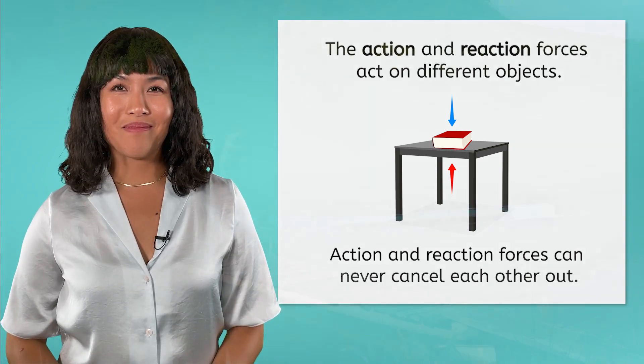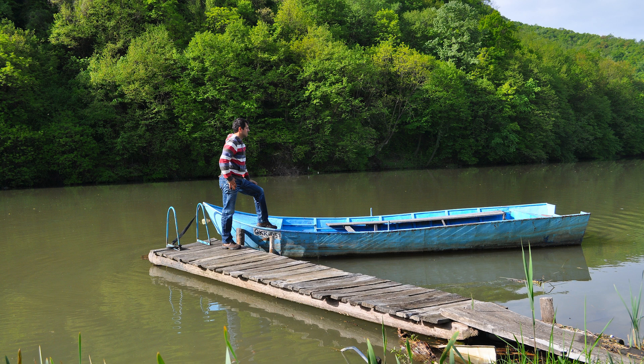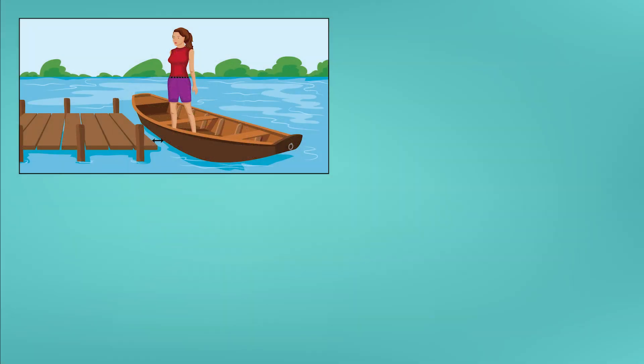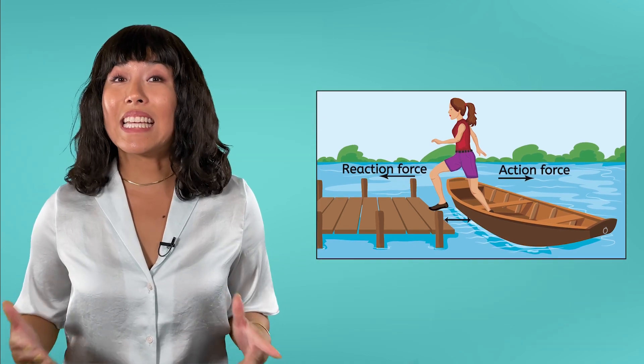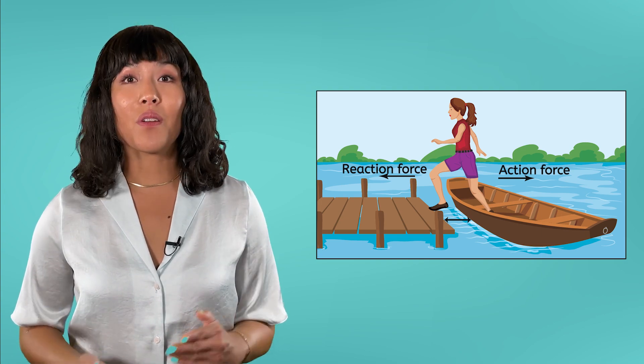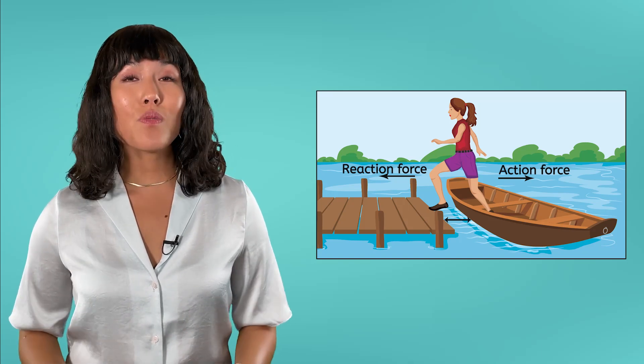Have you ever stepped out of a small boat and watched it move backward away from you as you reach the dock? This is a perfect example of Newton's third law of motion. To step out of the boat, what do you do? You probably push backward on the boat with your foot. This is the action force. What is the reaction force? The boat pushes you forward, which results in you being able to step onto the dock. Notice that there was a force in each direction. One force on the boat, the other on the person. The magnitudes of these forces would have been equal.